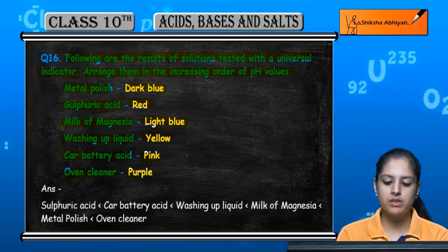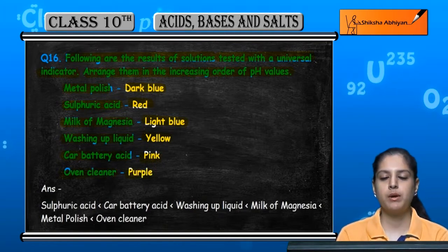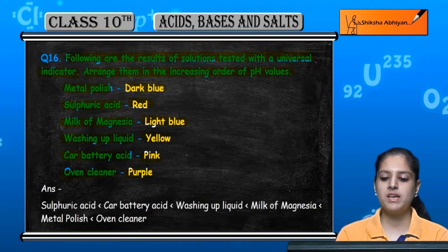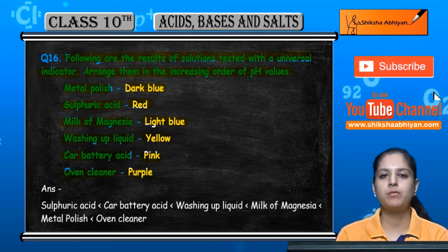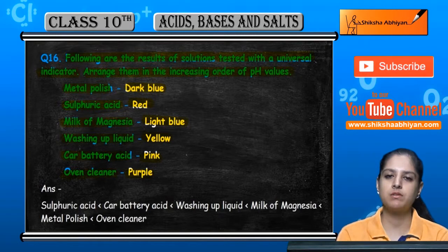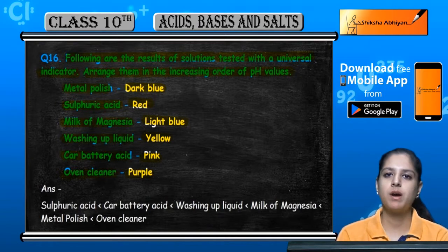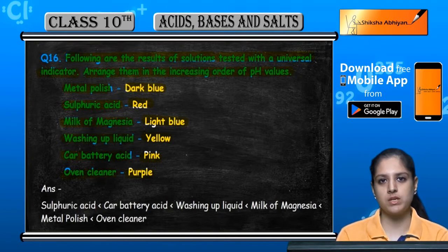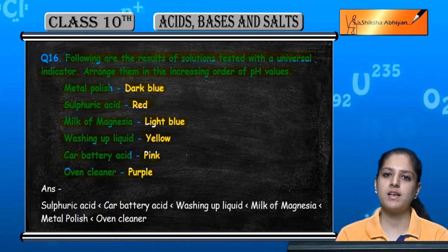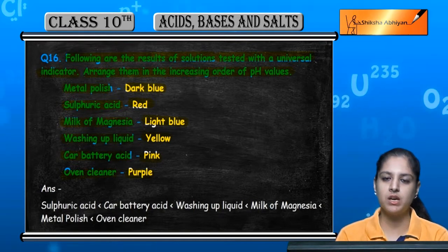And oven cleaner shows purple color. So we have to arrange all of these in increasing order of pH, meaning the one with the smallest pH comes first. The smallest pH means the most acidic solution.